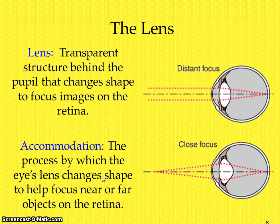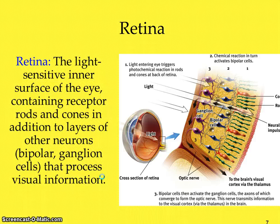If you're nearsighted, this means that the eyeball is actually misshapen and your eyeball focuses light rays in front of your retina. Whereas with farsightedness, the light rays actually reach your retina before they have focused the image. So for those of you who are either nearsighted or farsighted, that's what's occurring in your lens.